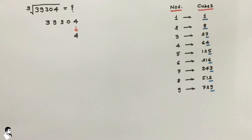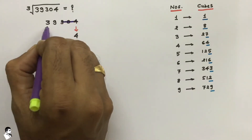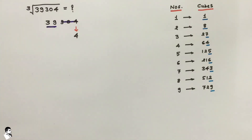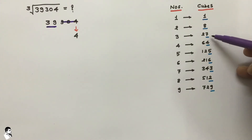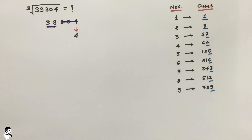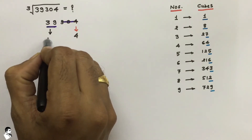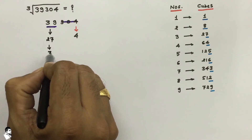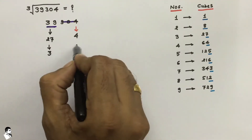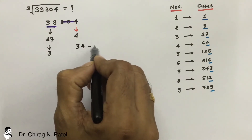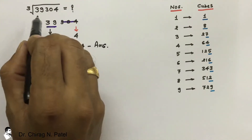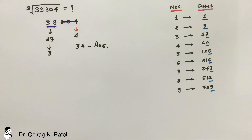Now just remove the last 3 digits and the remaining number is 39. We need to find 39 in this table. If it is not available, find the lowest value close to 39, which is 27, and 27 is the cube of 3. Write those two digits together and that gives the cube root of this big number. So the answer is 34.